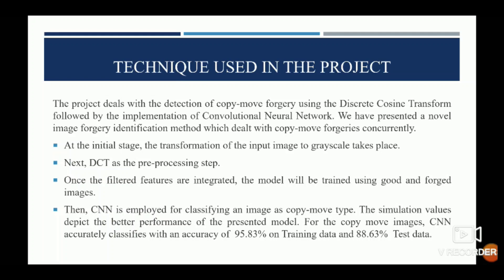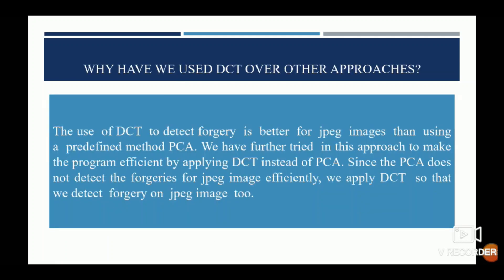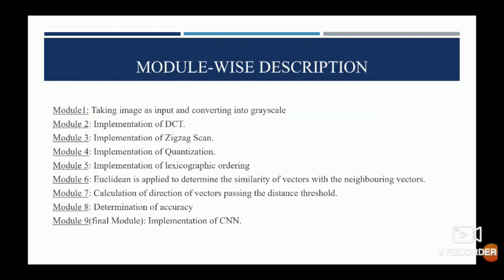CNN achieves a classification accuracy of 95.83% on training data and 88.63% on test data. We have used DCT over other approaches because DCT detects forgery better for JPEG images.